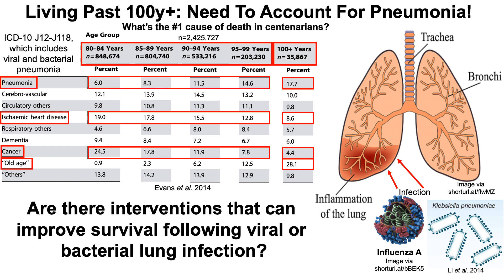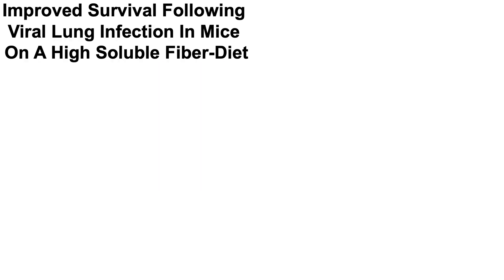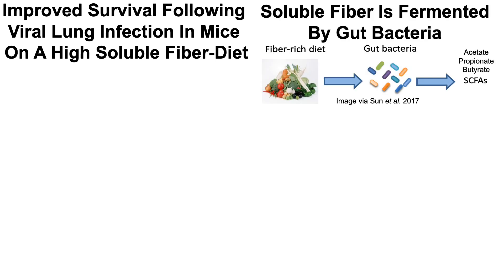So what interventions can we use to improve survival following viral or bacterial lung infection? There's improved survival following viral lung infection in mice on a high-soluble fiber diet. Dietary fiber is comprised of insoluble fiber, which is not fermented by gut bacteria, and soluble fiber, which is fermented by gut bacteria to form the short-chain fatty acids acetate, propionate, and butyrate.